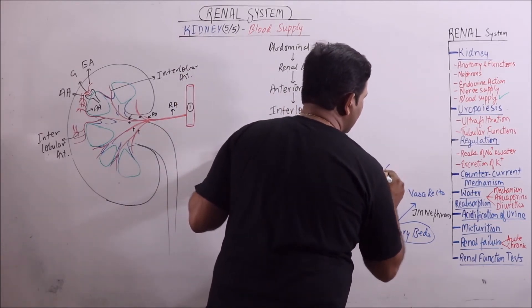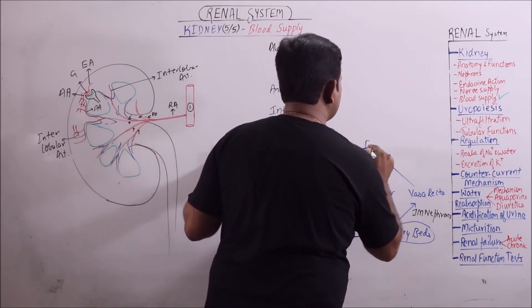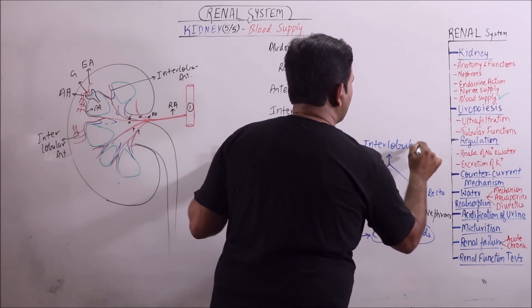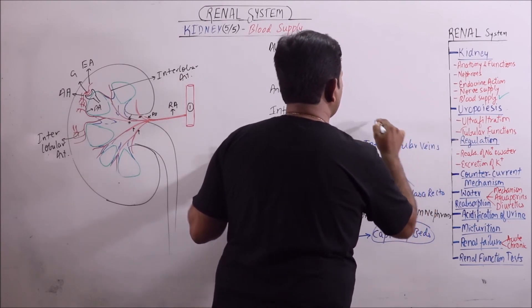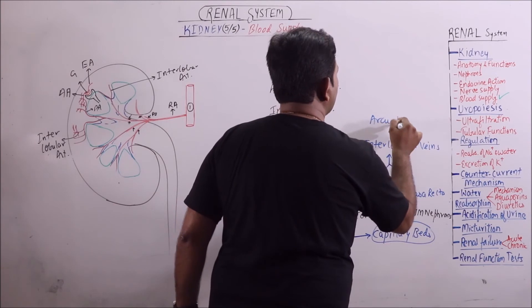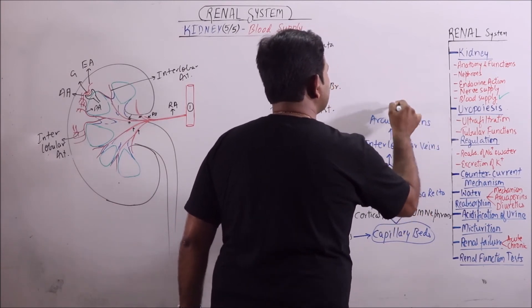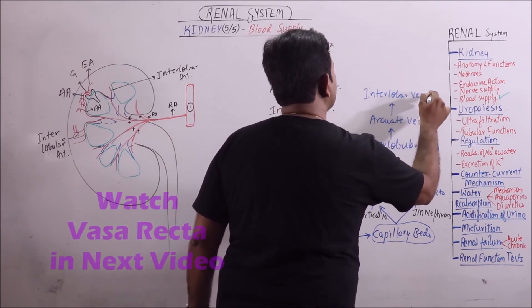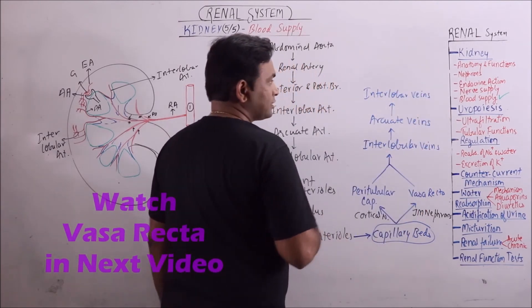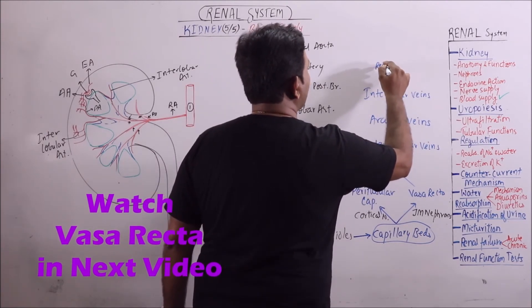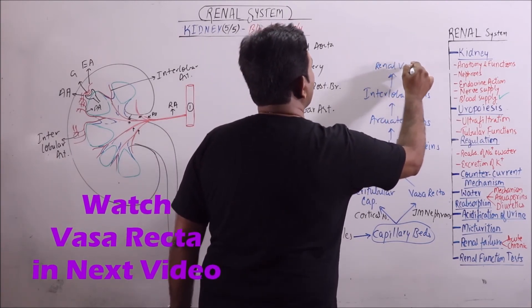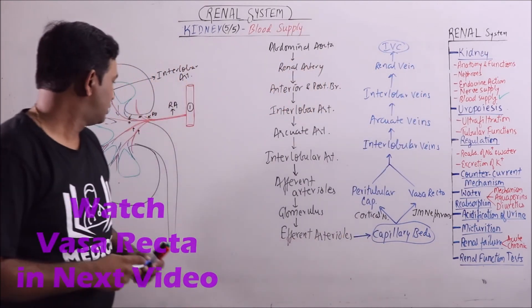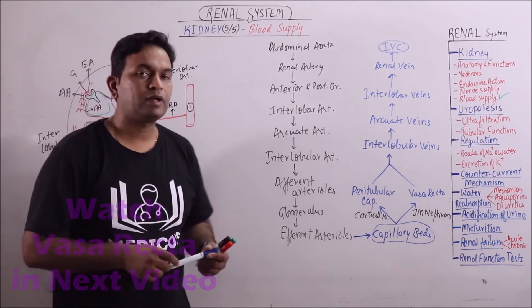These then unite to form interlobular veins, then arcuate veins, then interlobar veins. Finally, five to six interlobar veins reunite to form the renal vein, which ends in the inferior vena cava. That is all about the blood supply of the kidney.